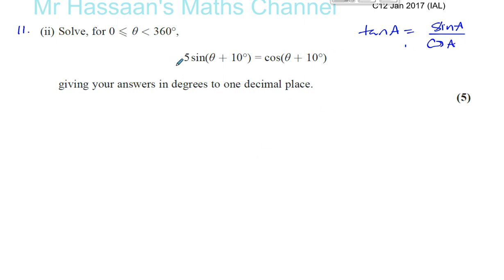If I want to make this into one ratio, I can spot that if I divide both sides by cosine of this angle, this side will become 1 and this side will become 5 tan of that angle. I've only got one ratio, so I can continue. Let's just do that.